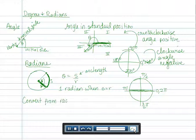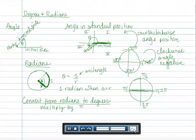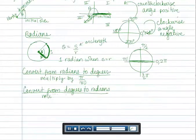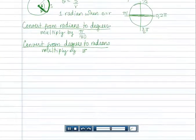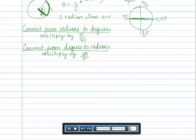How do we convert from radians to degrees? You multiply by 180/π. And how do we convert from degrees to radians? You multiply by π/180. Let's do some examples.